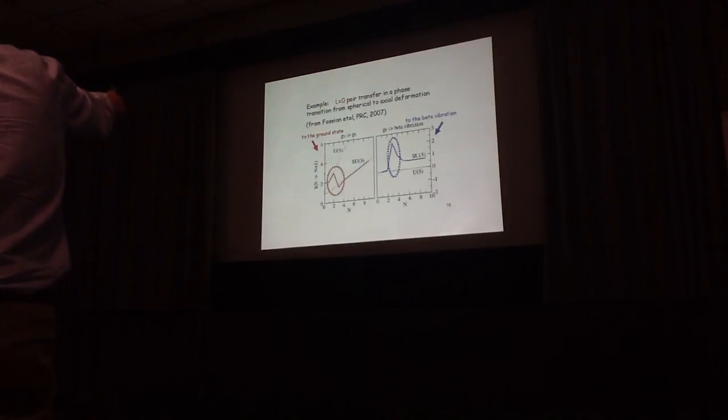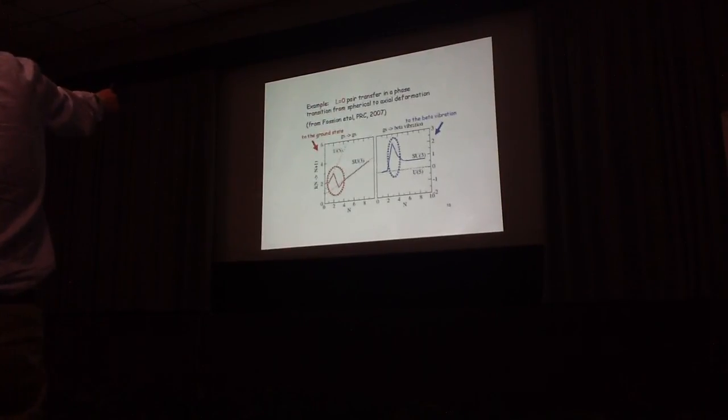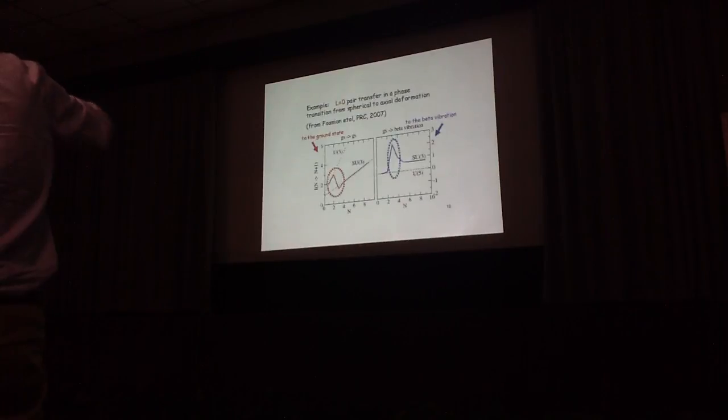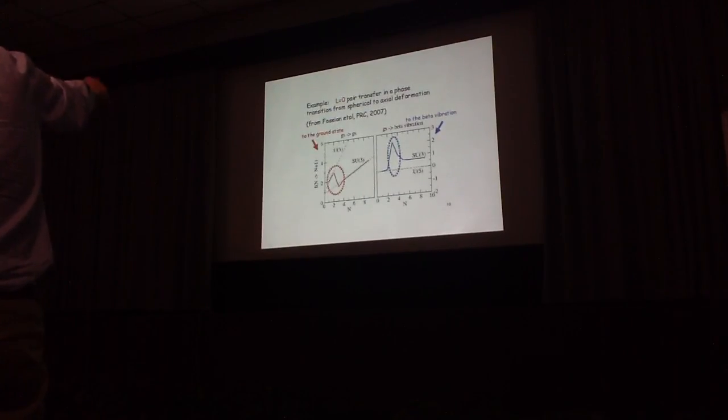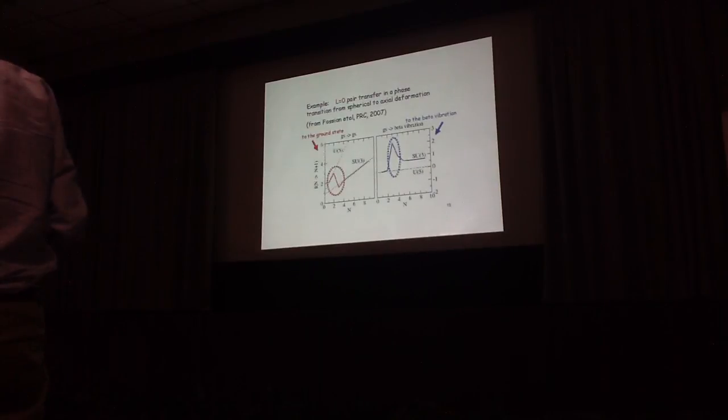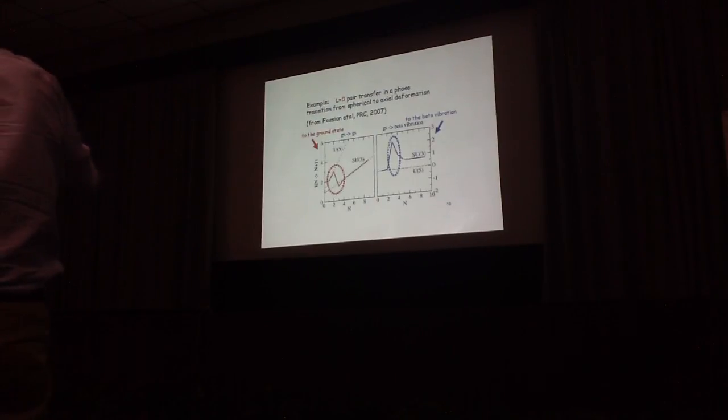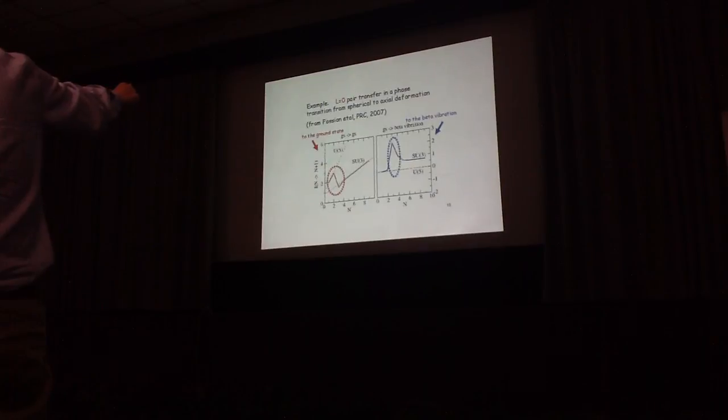For example, going from U5 to SU3, and looking at the transition from the ground state, then you get clearly discontinuity in correspondence of the phase transition. And not only for transition to the ground state, but also transition to the first excited state.